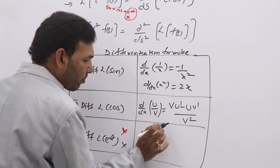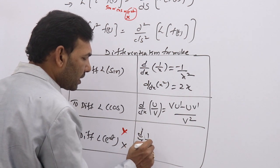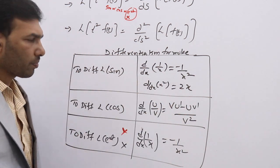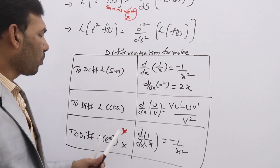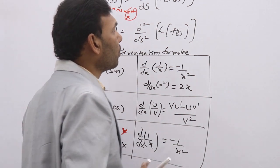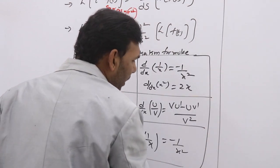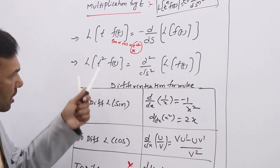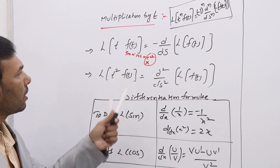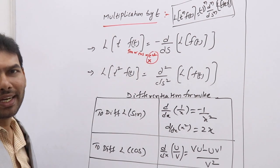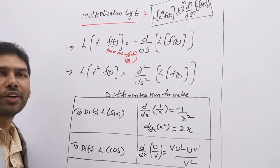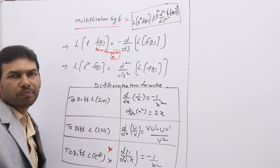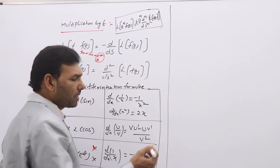The differentiation of 1/x — the same formula used for sin — is what we apply. For e^(at) in product, we apply the first shifting theorem. If you can remember just these differentiation formulas, that is enough to evaluate any multiplication by t problem. We will discuss in detail with examples.